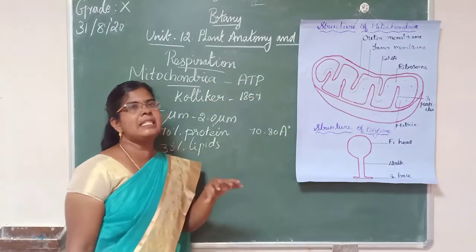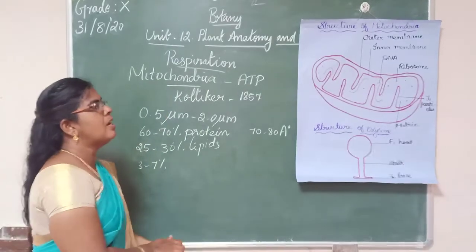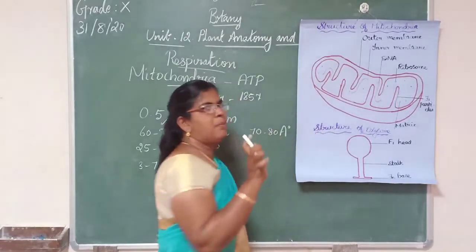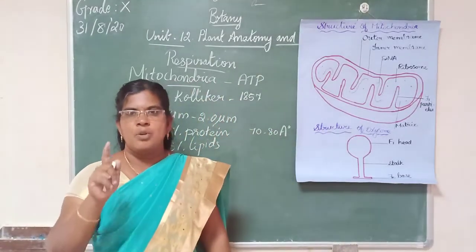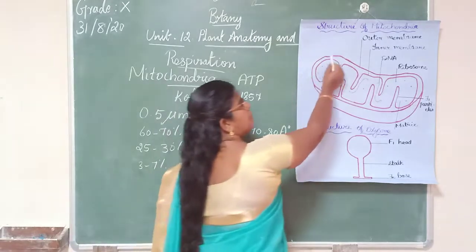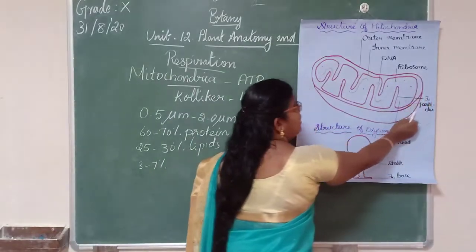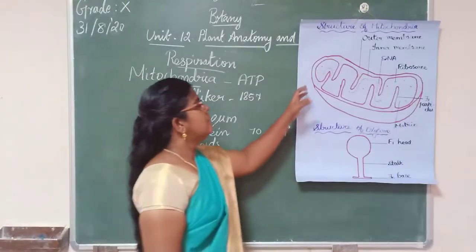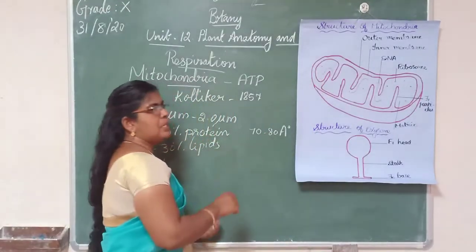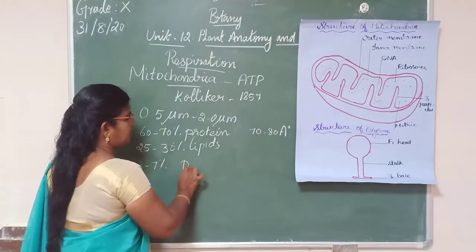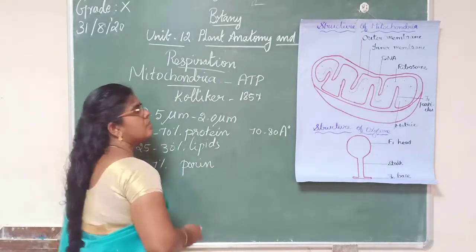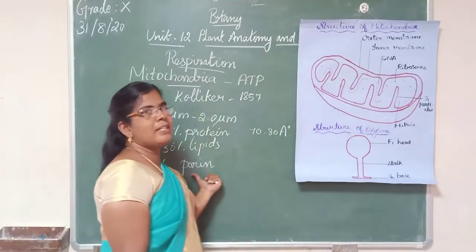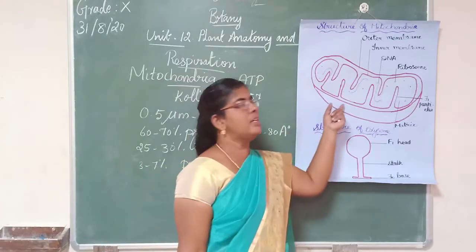The outer membrane allows small molecules to pass through it. It also contains lipids and proteins, including a protein called porin, which acts as a channel for the entry of other molecules.